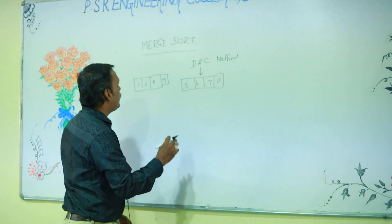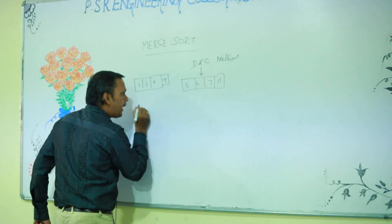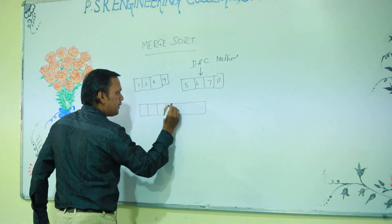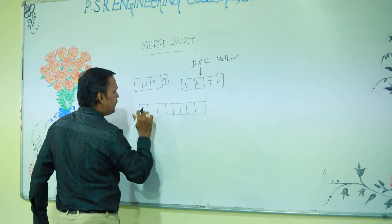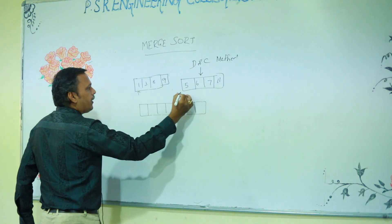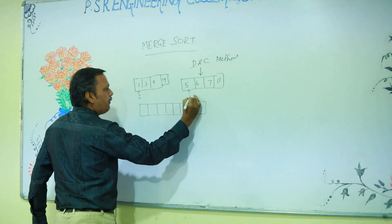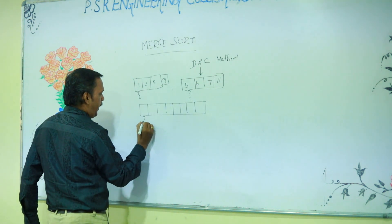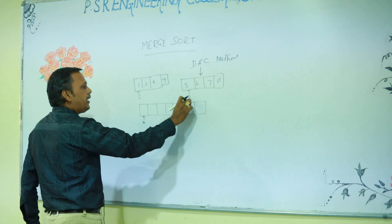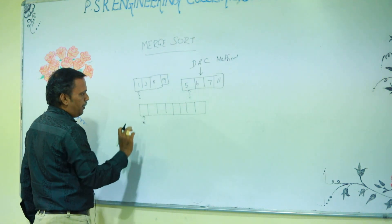These are the sorted arrays. Now a new auxiliary array will be introduced, having no elements. Here that is the left-hand side pointer, here that is the right-hand side pointer, i and j. That will be k. i indicates the left position of the first array, j is the left position of the second array, and k is the left position of the auxiliary array.